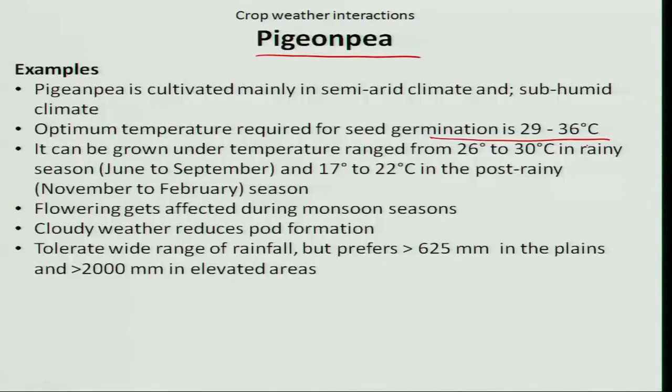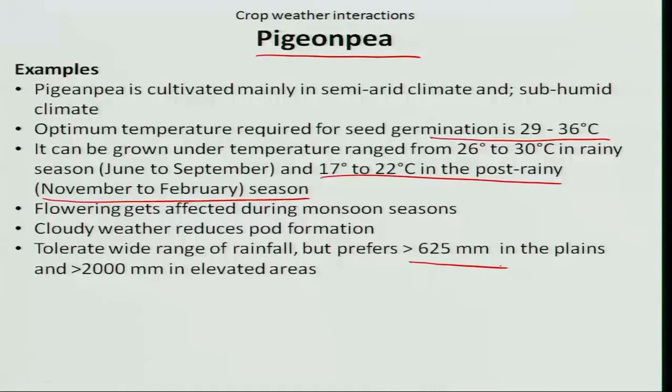During its entire growth stages, pigeonpea requires an optimum temperature of 29 to 30 degree Celsius for the rainy season crop and 17 to 22 degree Celsius during the post rainy season. Being a quantitative short day plant, if the photoperiod goes above 10 to 12 hours, it will harm the flowering. Likewise, cloudy weather and prolonged cool temperature during the flowering stage affect pollination. The water requirement of pigeonpea is around 625 mm in the plains and 2000 mm in elevated areas, showing wider adaptability under both plains and hilly regions. This concludes the crop weather interaction for sorghum, groundnut and pigeonpea.